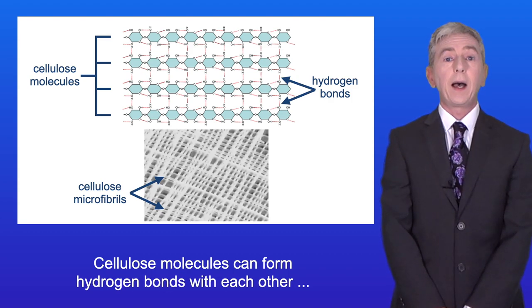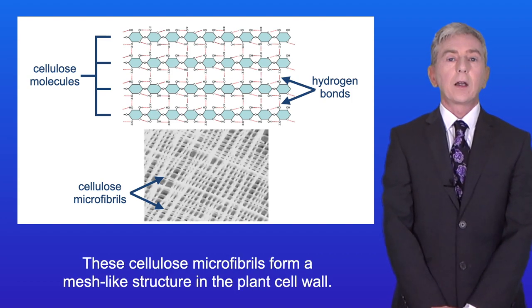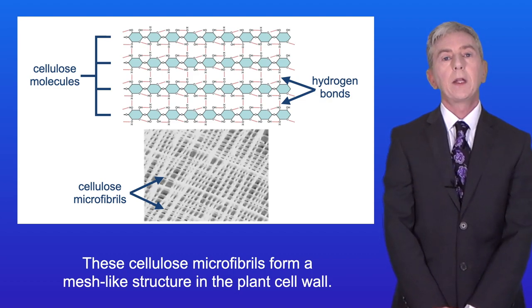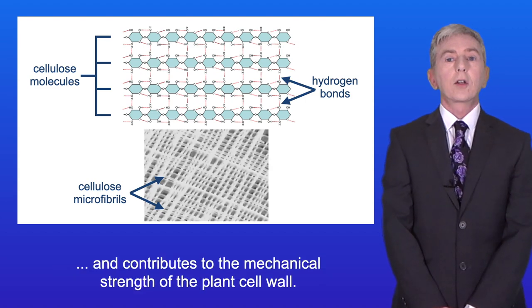Cellulose molecules can form hydrogen bonds with each other forming larger structures called microfibrils and these cellulose microfibrils form a mesh-like structure in the plant cell wall. This microfibril mesh is extremely strong and contributes to the mechanical strength of the plant cell wall.